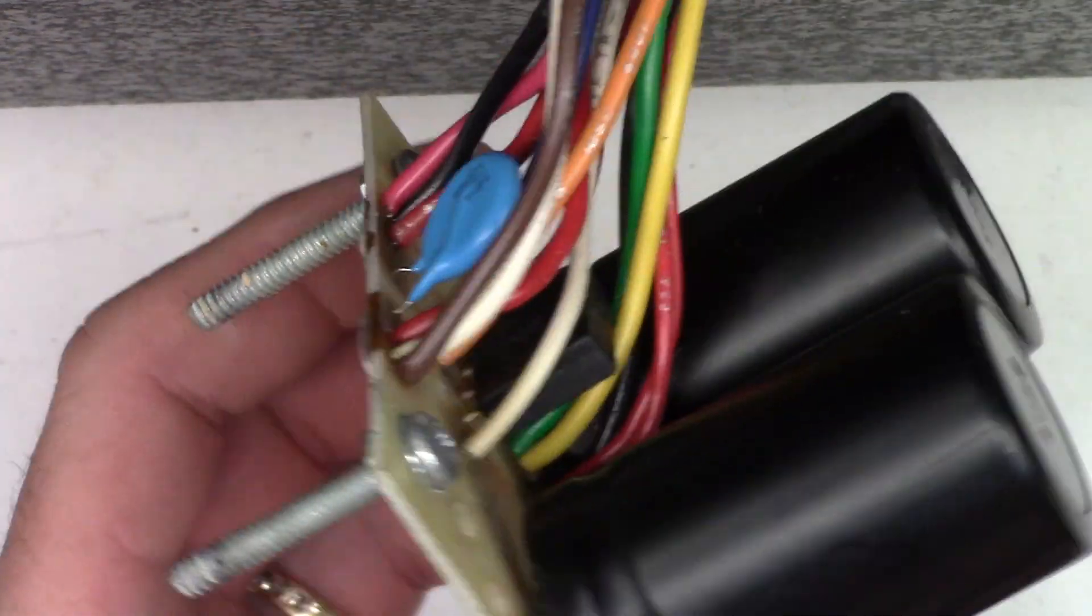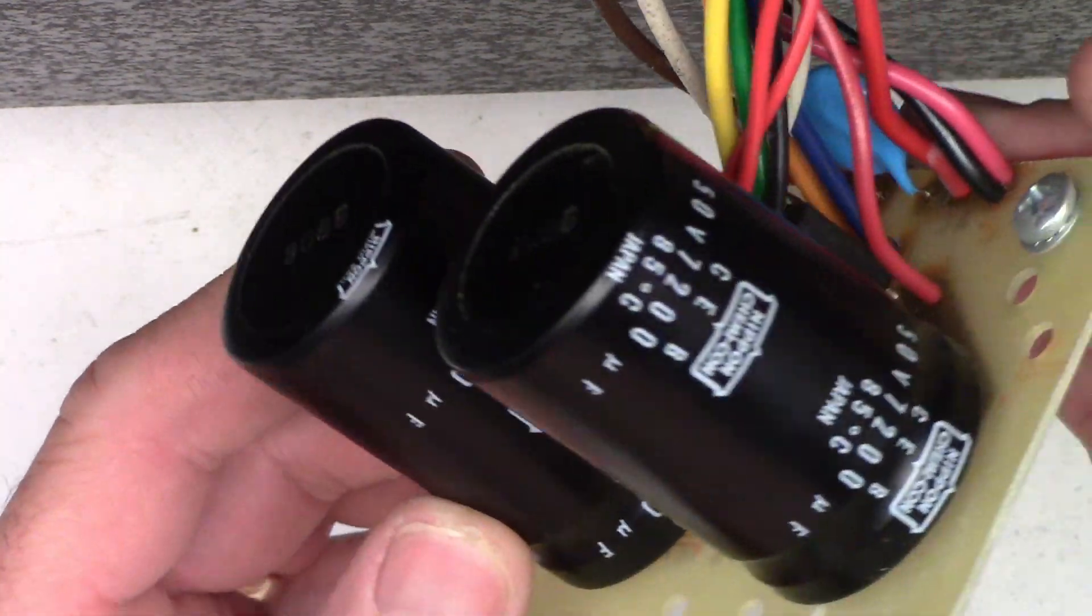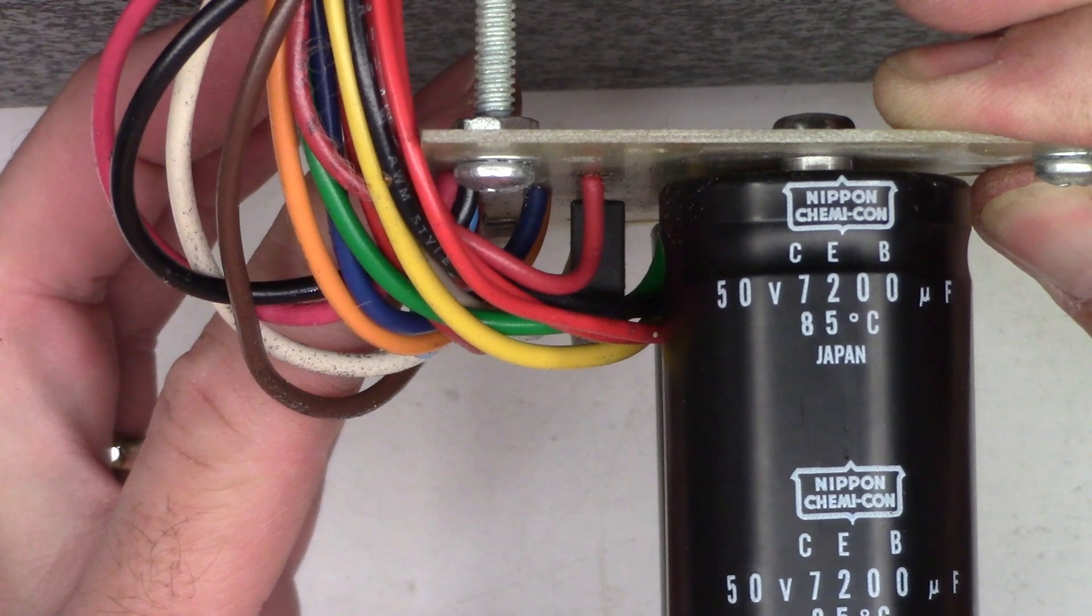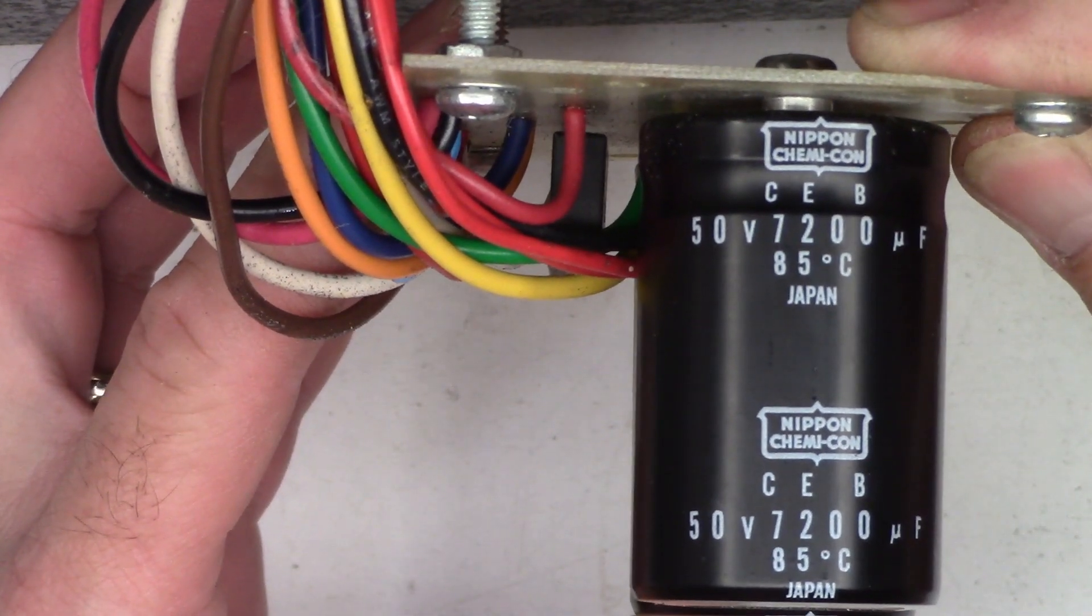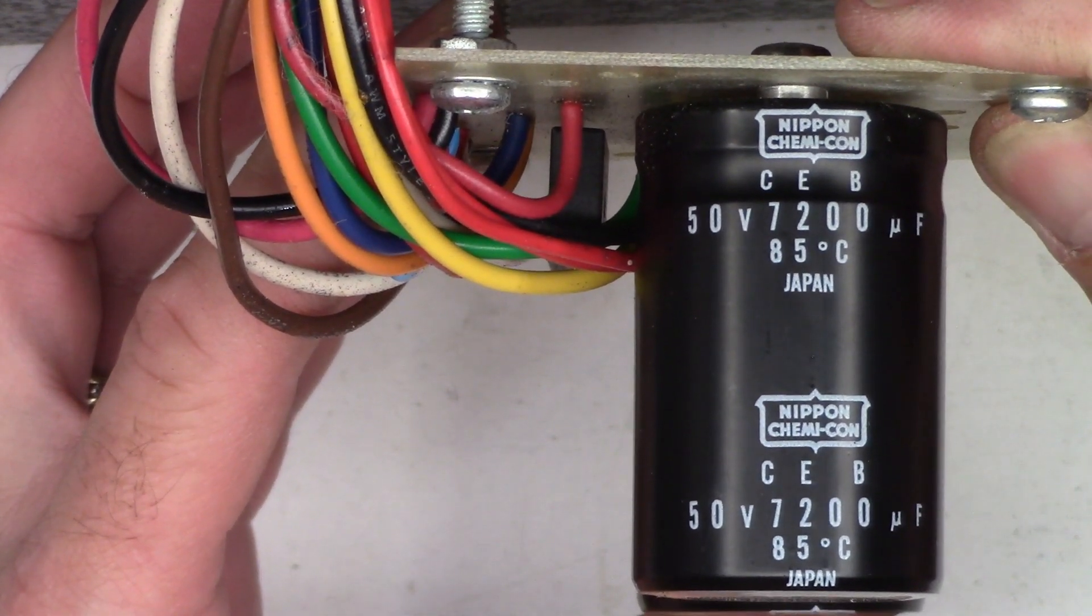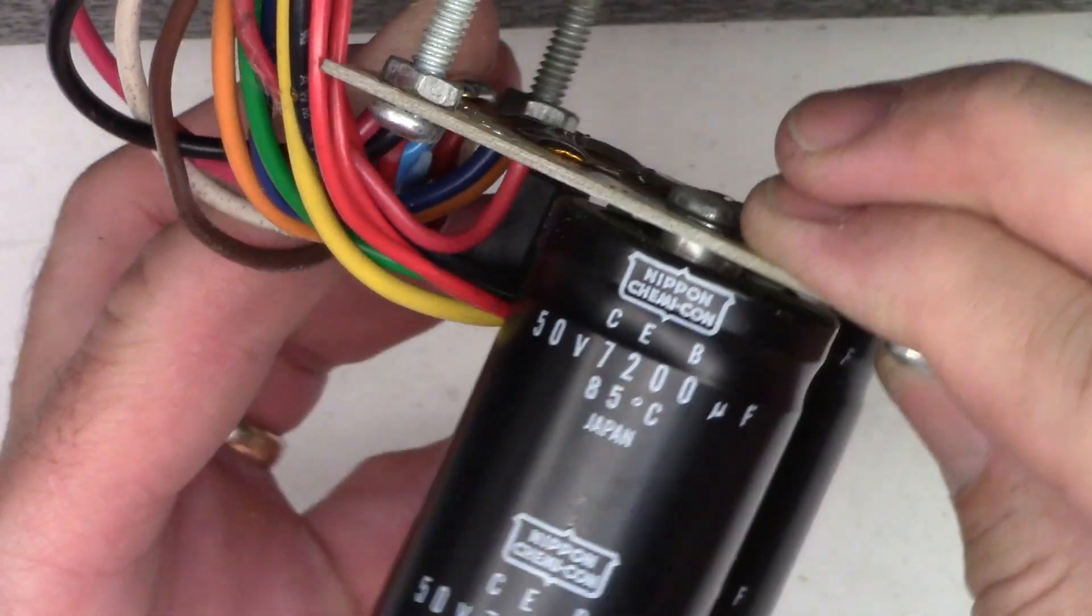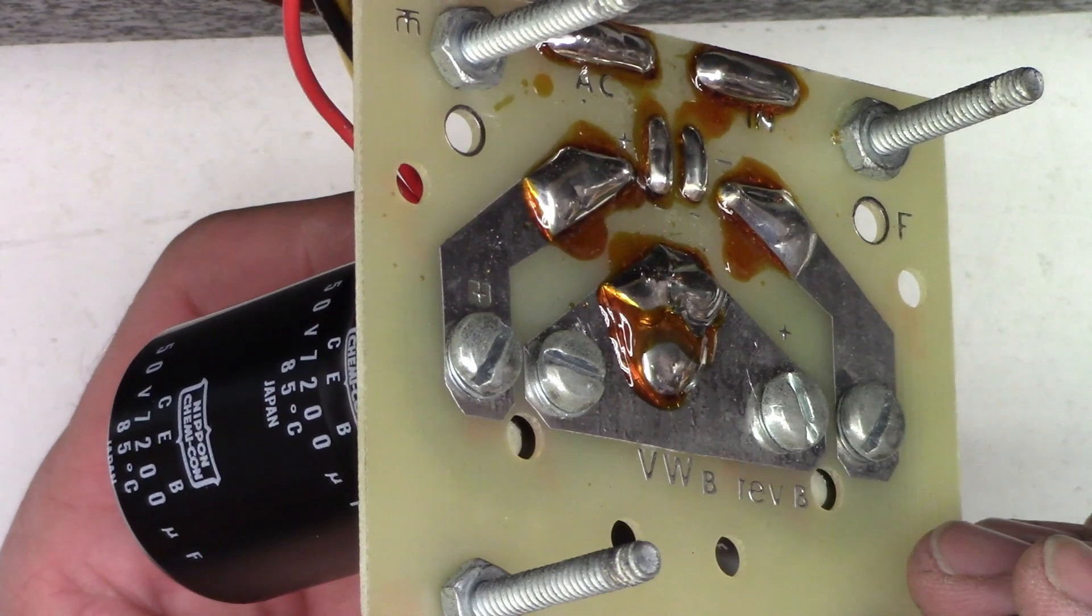And so, look at these big filter caps right here. What are they? They are Nippon Kimicon. Those are pretty good capacitors. 7200 microfarad at 50 volts and they are screw terminal capacitors. Let's get the ESR meter out and do a quick ESR check.